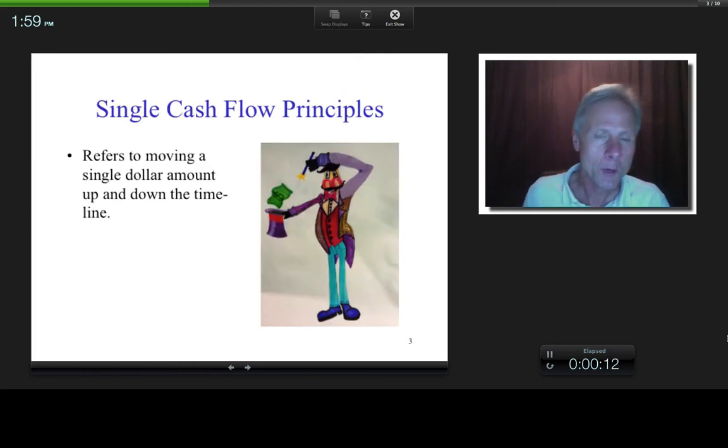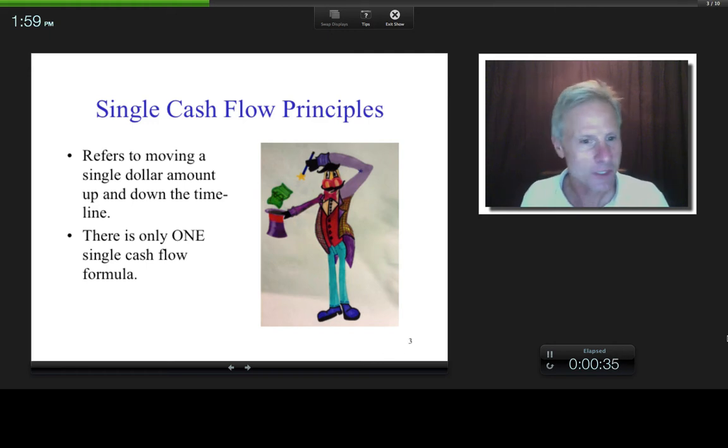So here we are in time value of money with single cash flow principles, and what I mean by single cash flow is basically taking a single cash number like say $10 and moving it up and down the timeline equation any way you want to. In other words, if you've got $10 at time zero, what is it worth at time two? And as I mentioned, there's only one single cash flow formula that exists.